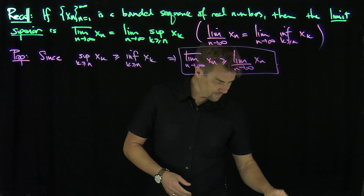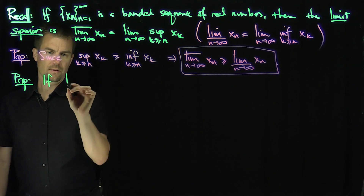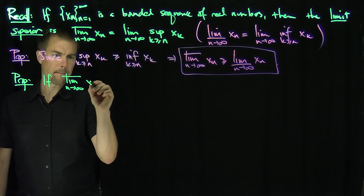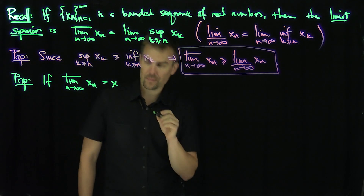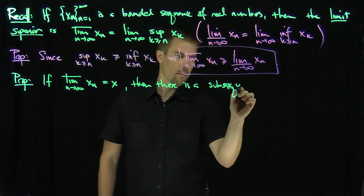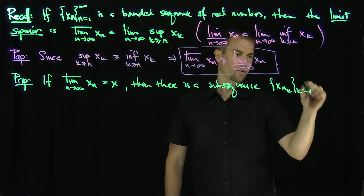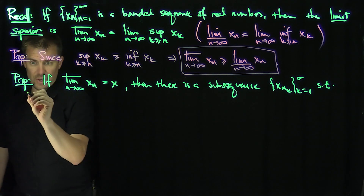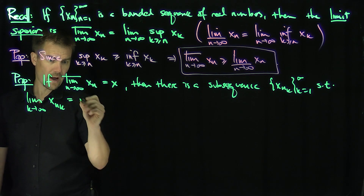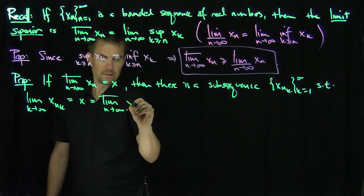Next I want to prove the following proposition: if the lim sup as n goes to infinity of x_n equals some number x, then there is a subsequence x_{n_k} (k from 1 to infinity) of the original sequence such that the limit as k goes to infinity of x_{n_k} equals x — which is of course just the lim sup. In other words, I can always find a subsequence which converges to the lim sup.